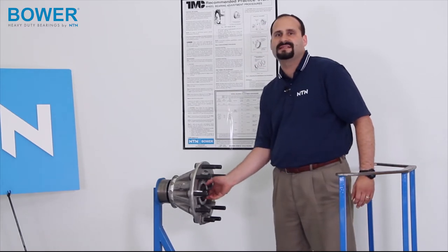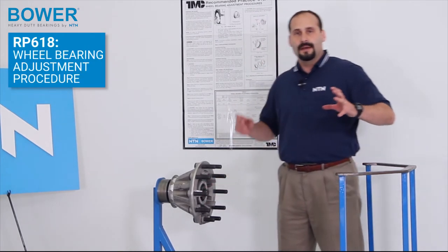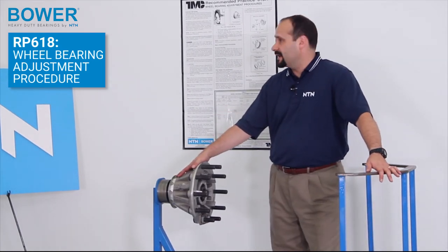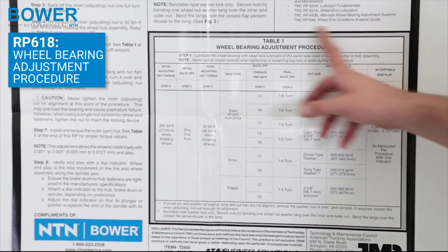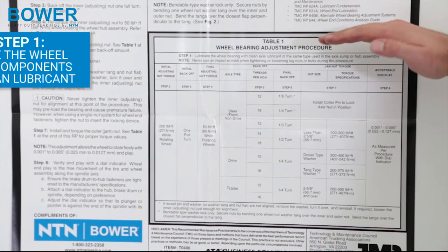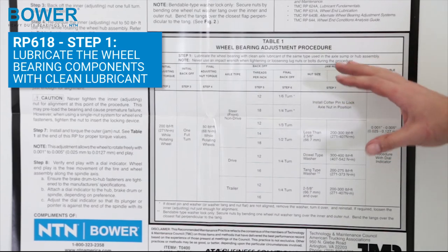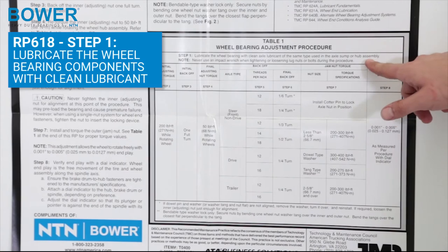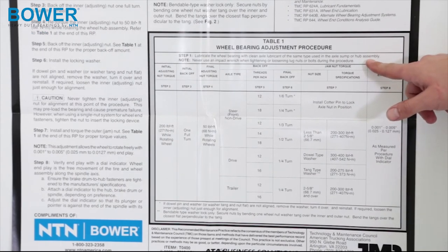And this is where we get into RP-618, the actual mounting of this hub onto the truck. Right here we have the RP-618 table, step-by-step progression for what you should do when you're mounting this hub on. Step one, we just did, we lubricated the parts with clean axle oil before we mounted it on.